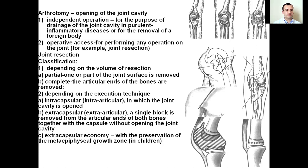Classification: depending on the volume of resection — partial, where one part of the joint surface is removed, or complete, where the articular ends of the bones are removed. Depending on execution technique: intracapsular or intraarticular, in which the joint cavity is opened, and extracapsular or extraarticular, where a single block is removed from the articular ends of both bones together with the capsule without opening the joint cavity.